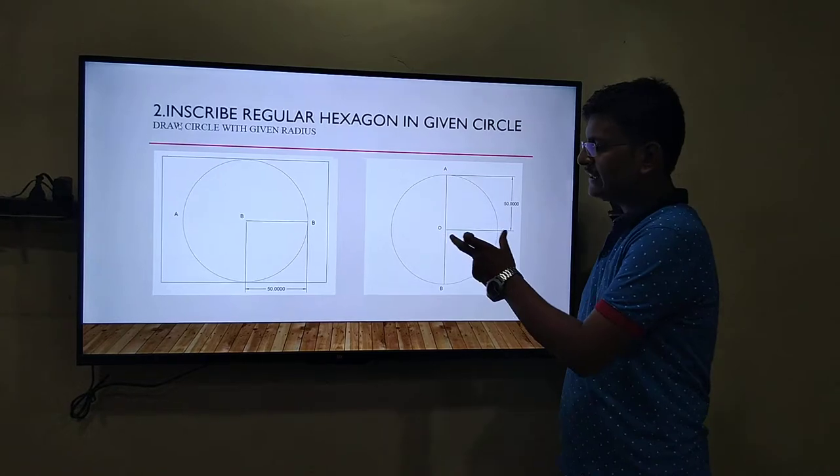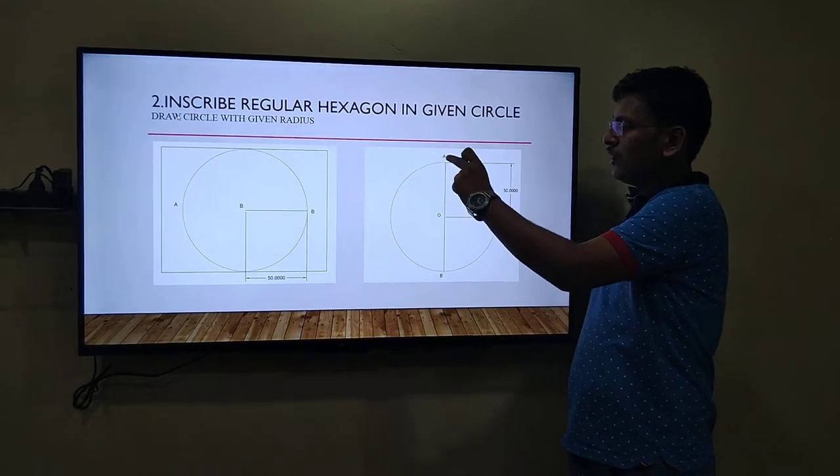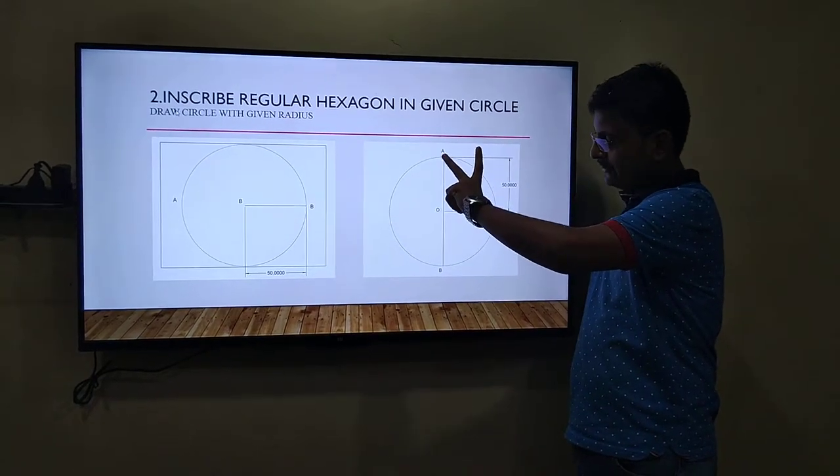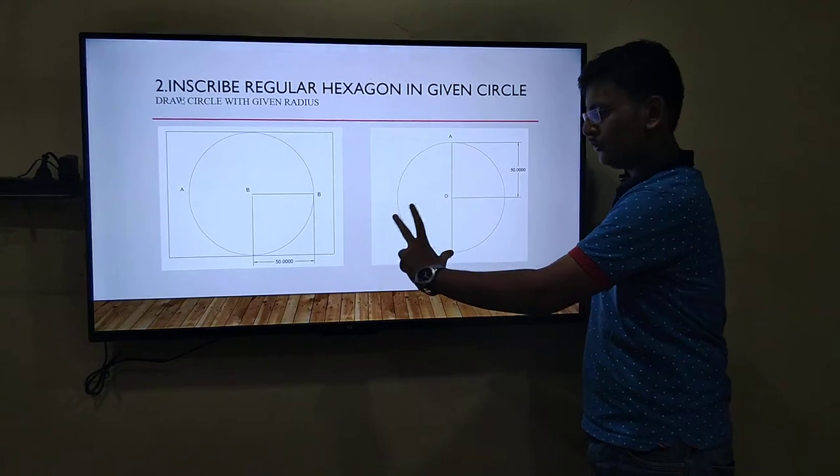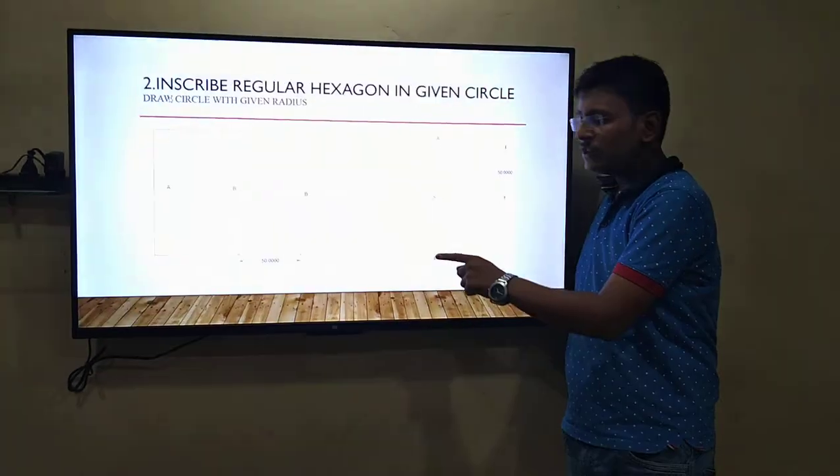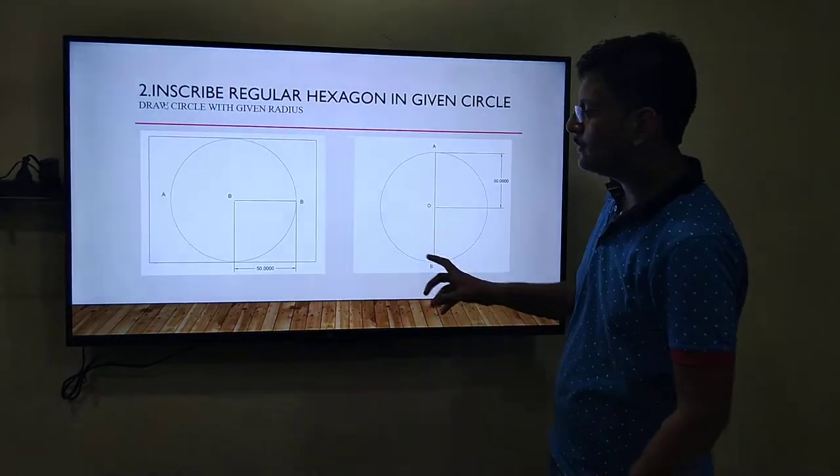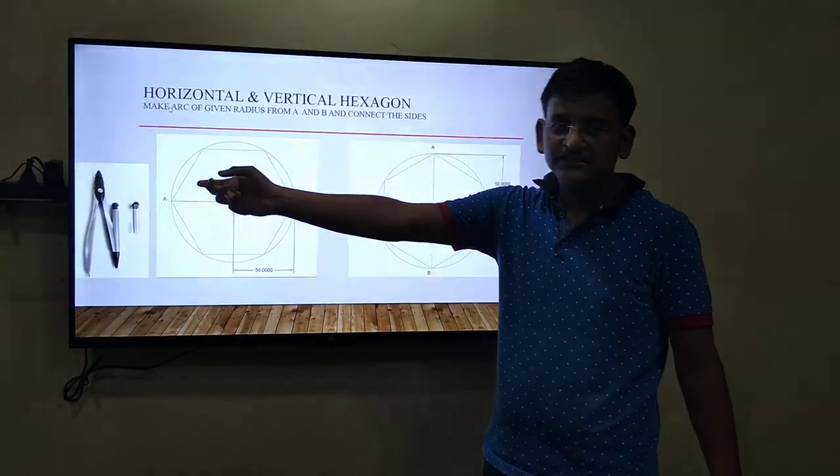Take the radius, OA as radius. From point A, mark it like this. And from point B, same we have to mark like this. And you will have to join all the parts. Same we will have to do over here. And your hexagon will look something like this.